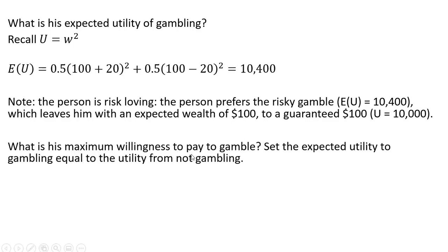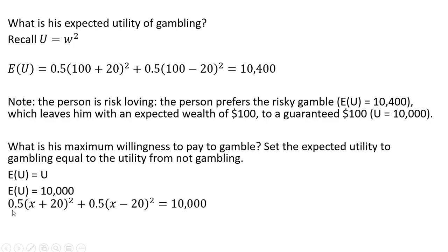What is his maximum willingness to pay to gamble? We're going to set the expected utility of gambling equal to the utility from not gambling. So: 0.5 times (x + 20) squared plus 0.5 times (x − 20) squared equals $10,000.